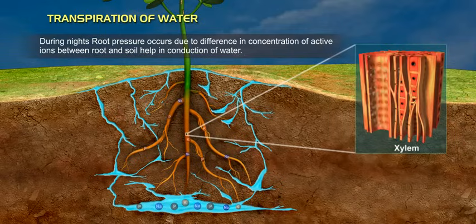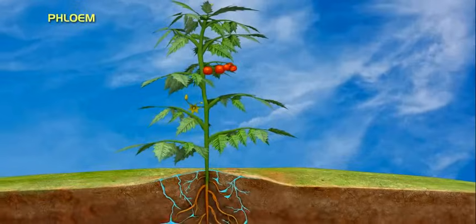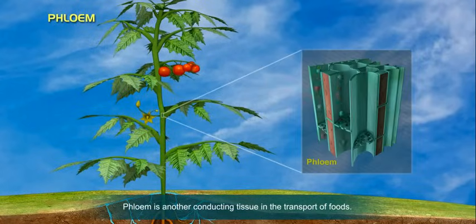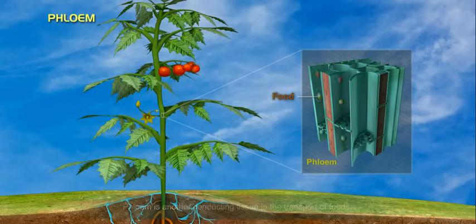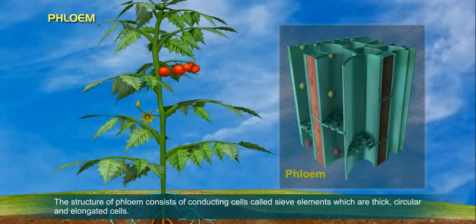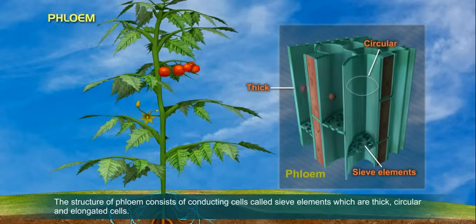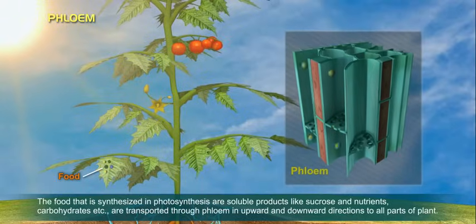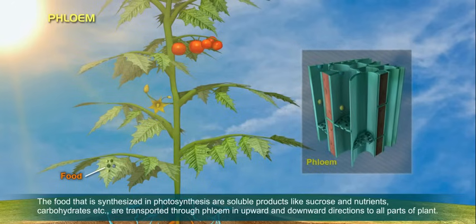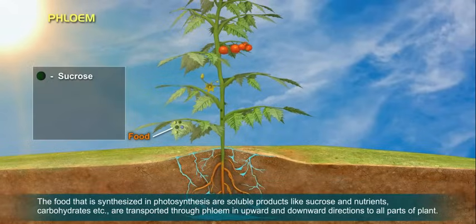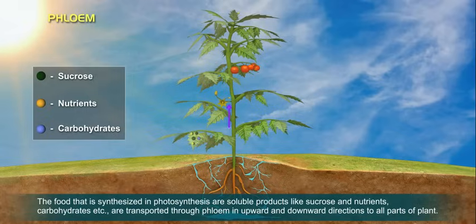During nights, root pressure occurs due to the difference in concentration of active ions between root and soil, helping in conduction of water. Phloem is another conducting tissue responsible for transport of food. The structure of phloem consists of conducting cells called sieve elements, which are thick, circular, and elongated cells. The food synthesized in photosynthesis — soluble products like sucrose, nutrients, and carbohydrates — are transported through phloem in upward and downward directions to all parts of the plant.